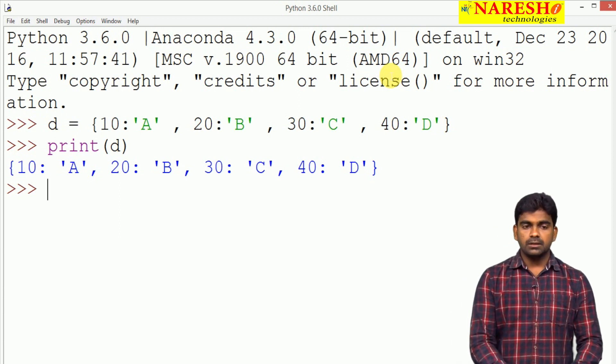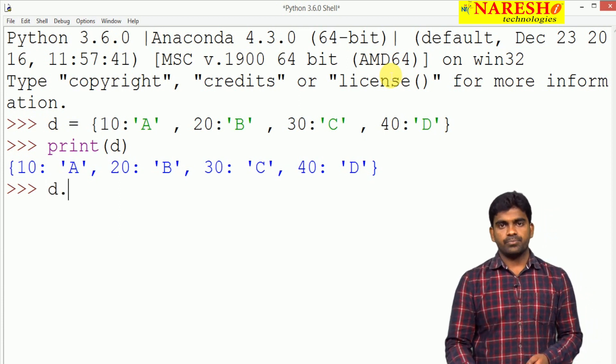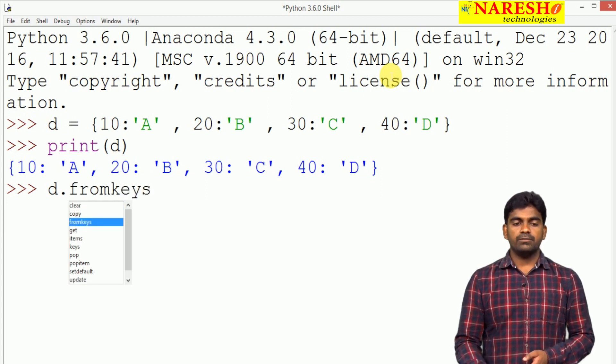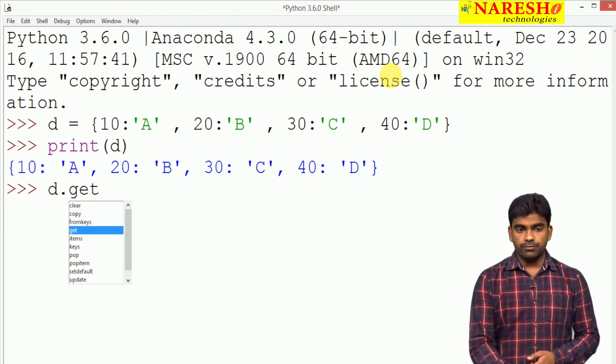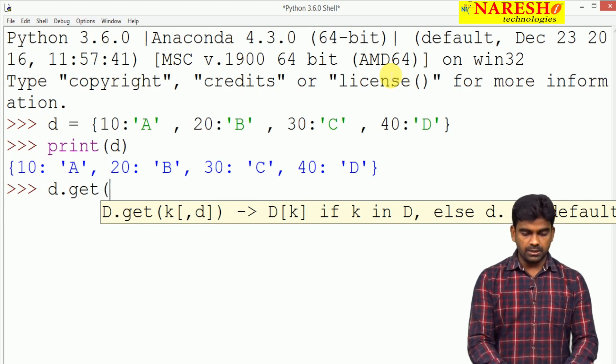And next, d dot will show the list of functions which are available. Here whenever we use get, whenever we specify the key, key is always unique.